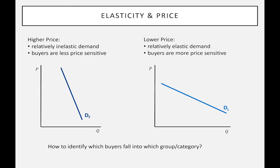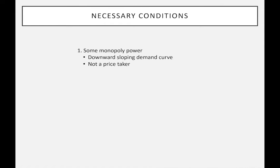The real trick with price discrimination is finding another way to identify the two groups. Before we look at how to do that, I want to highlight three necessary conditions for practicing price discrimination. The first is that the firm must possess some kind of monopoly power — it cannot be facing a perfectly elastic demand curve. In other words, it can't be a price taker; the demand must be at least partially inelastic.